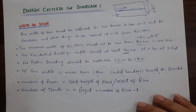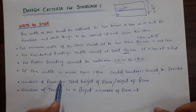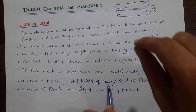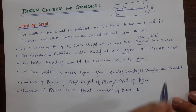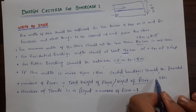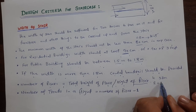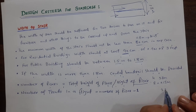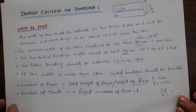The next criterion is the number of risers. To find the number of risers, divide the total height of the floor by the height of one riser. For example, if the floor height is 3.2 meters and the riser height is 0.15 meters, then 3.2 divided by 0.15 gives you the number of risers.